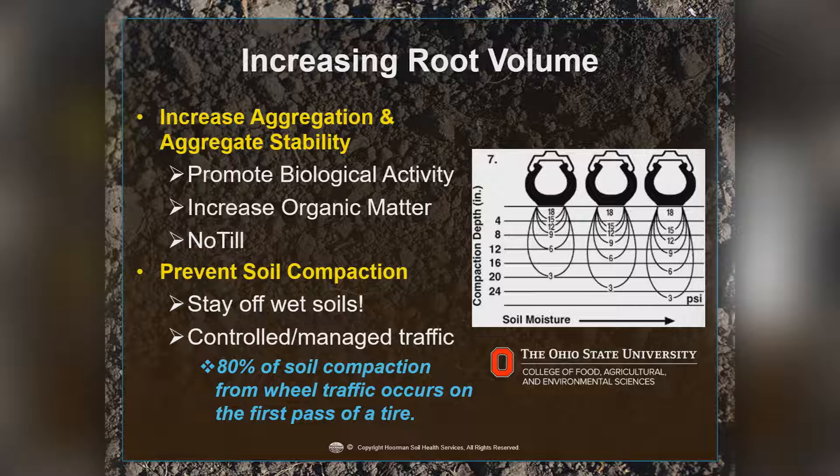One of the ways you can prevent soil compaction is to stay off your wet soils — you don't want to be smearing them. Controlled or managed traffic will also help. Once you do till the soil, 80% of your soil compaction occurs from the wheel traffic from the very first pass of that tire over freshly tilled soil.